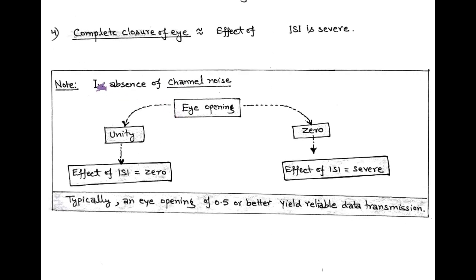On the basis of the above information, we summarize key points. First, consider a noise-free channel. In this case, the eye opening has two values: when it is unity, the effect of inter-symbol interference becomes zero; while when the eye opening is zero, there is a severe effect of inter-symbol interference. Typically, an eye opening of 0.5 or better gives reliable data transmission.